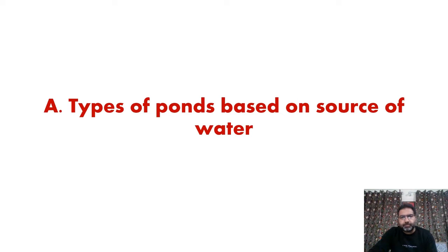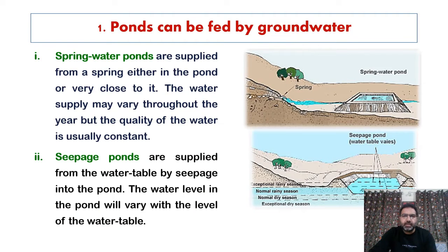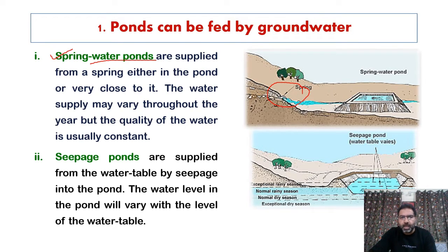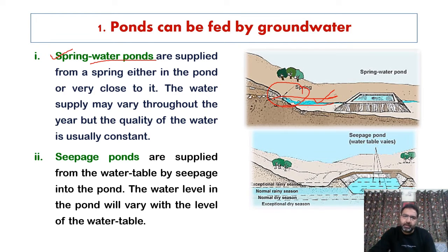We shall now talk one by one about the types of ponds. The first category is types of ponds based on the source of water. Ponds can be fed by groundwater. One of them is the spring water pond, where the water supply is from a spring which is either near or close to it. The water supply may vary throughout the year, but the quality of the water remains the same.